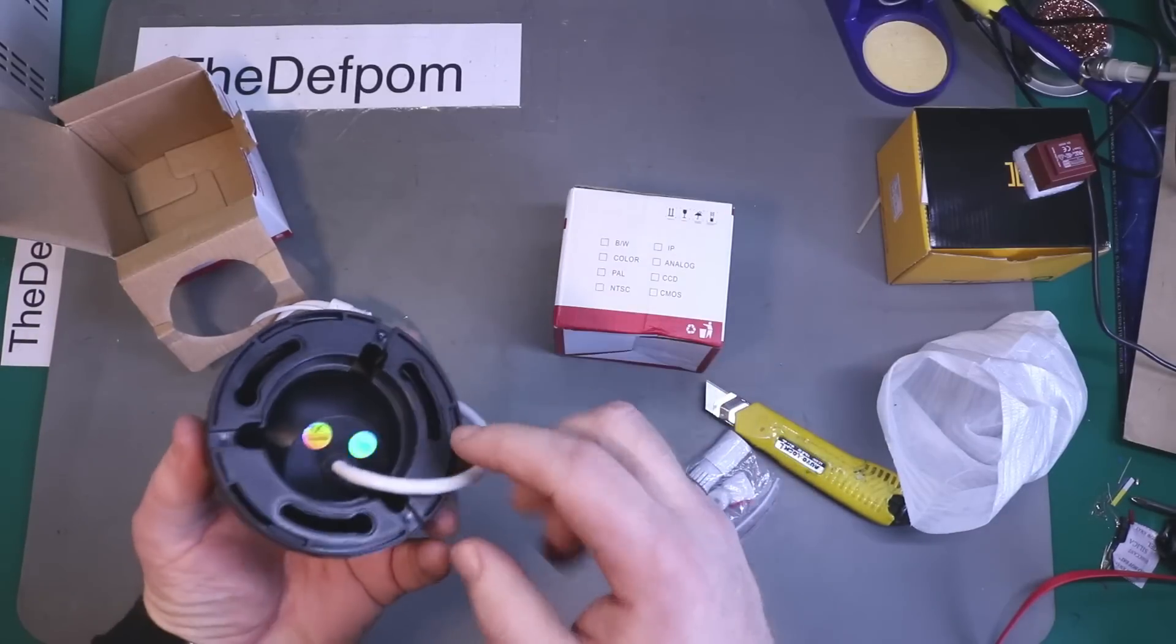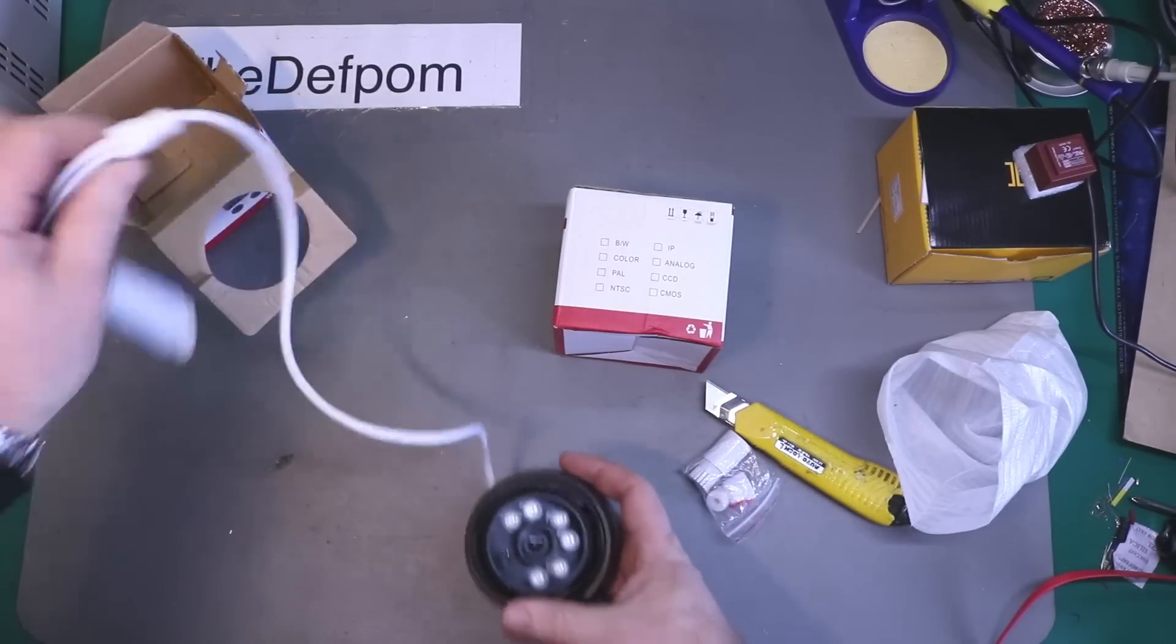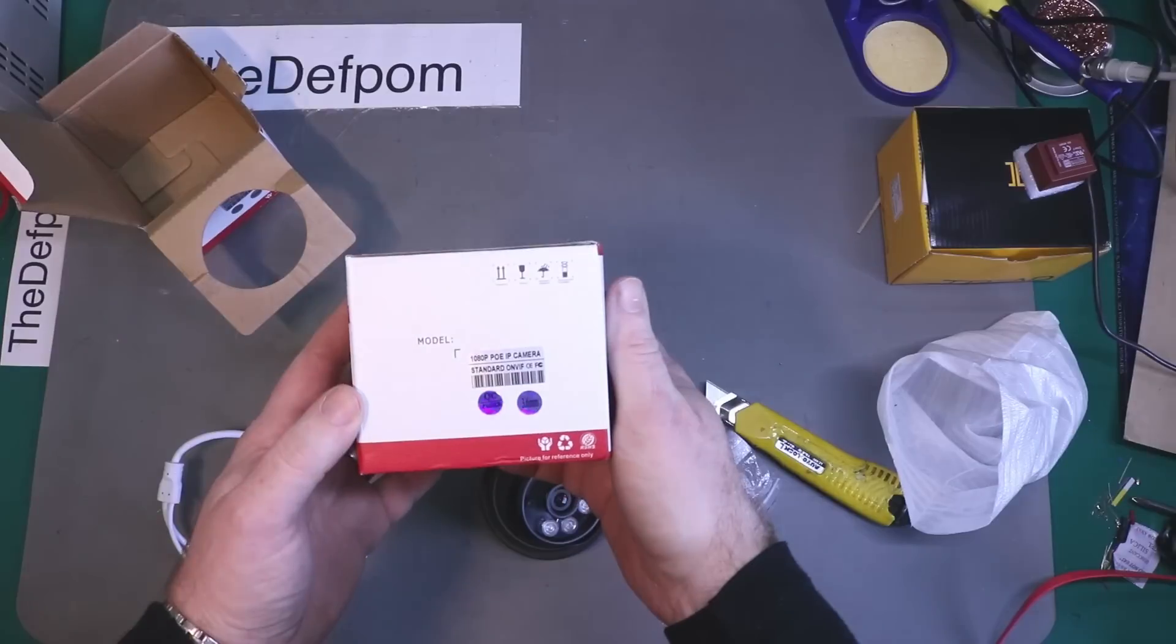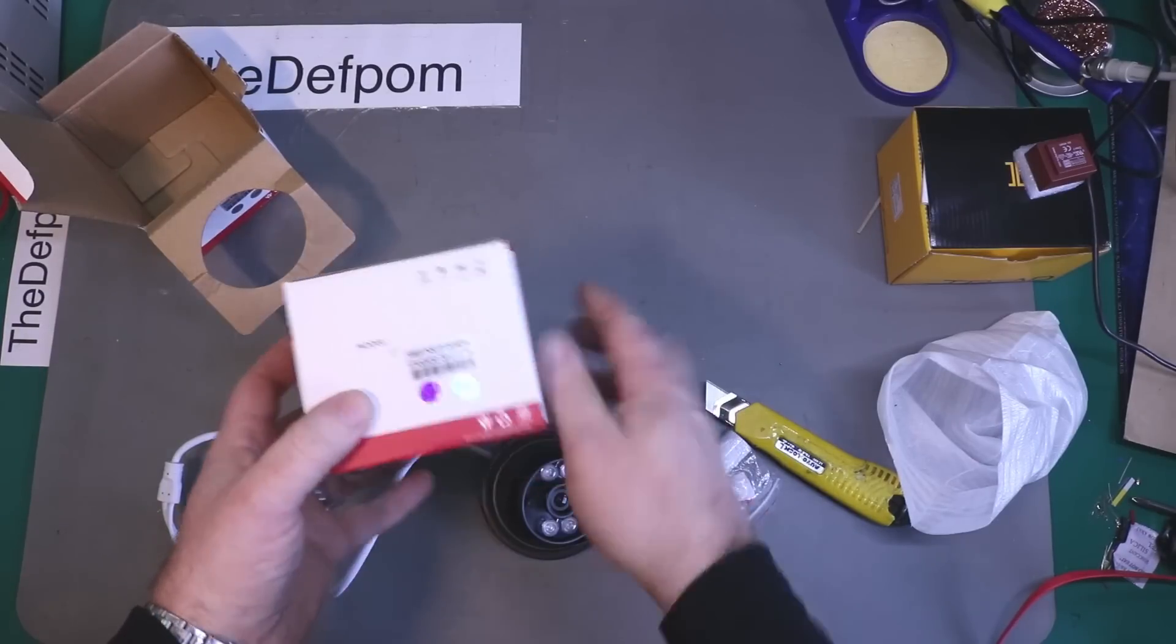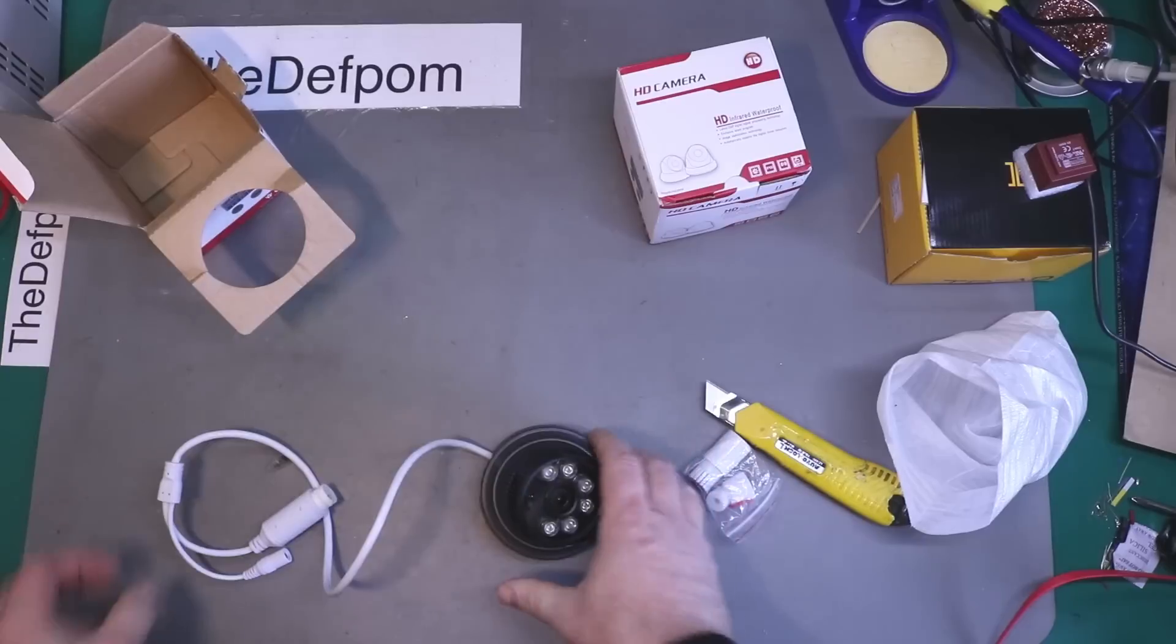1080p cameras. So not high resolution. This is a 3.6mm lens. I think the other one's the same. Yeah, it's exactly the same one. So they've got two of the same unit there.